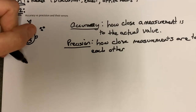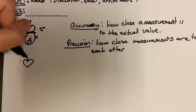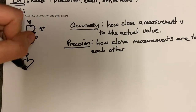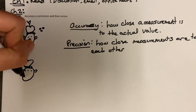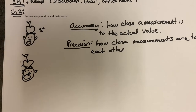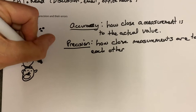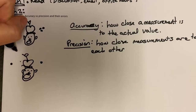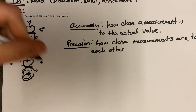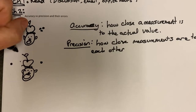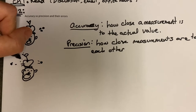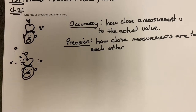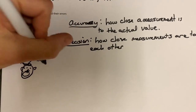Precision is how close measurements are to each other. Accuracy is how close a measurement is to the actual value. Let's keep the same example — same person, apple on her head, she's still screaming. You go to shoot the arrow and you get here, here, and maybe over here. That is not precise. You could almost argue it's accurate, but the average of all those values ends up off-center, so it's not exactly accurate either. It's neither accurate nor precise.